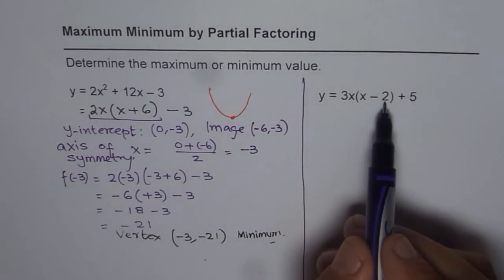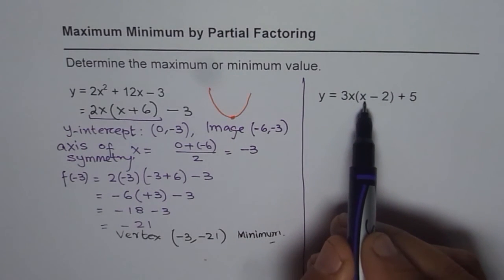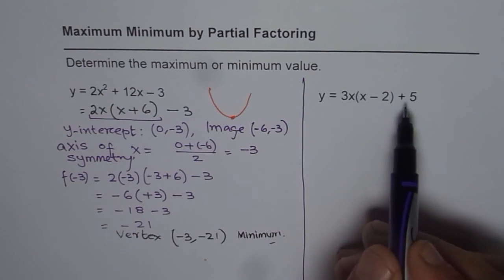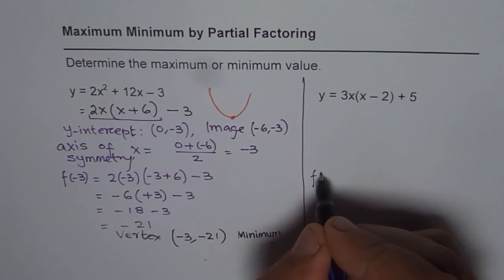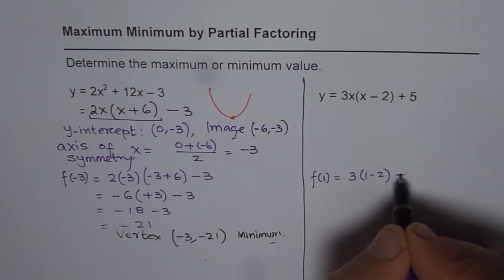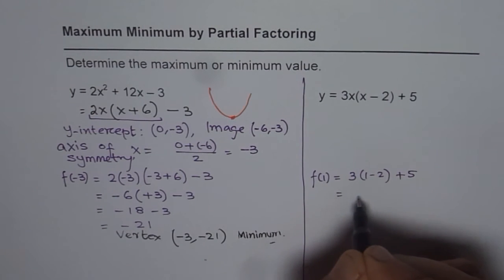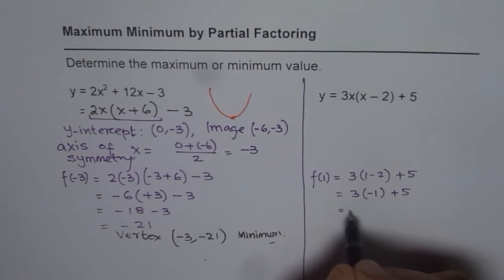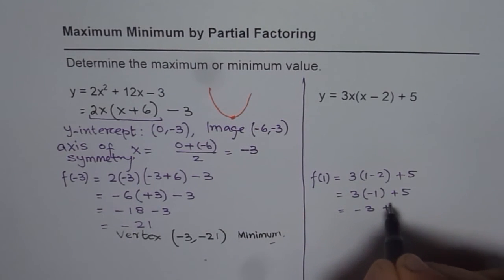So, average of these two zeros, this is always zero. This will be at plus 2. Half of plus 2 is plus 1. Once you substitute 1 there, you get your value. So, the value will be f of 1 equals 3 times 1 minus 2 plus 5. Which is 3 times minus 1 plus 5 and minus 3 plus 5, that is equal to 2.